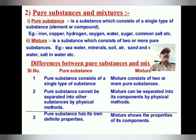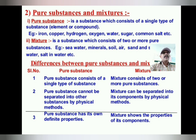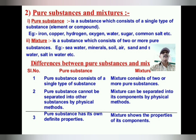A mixture can be separated into its components by physical methods easily. Third: a pure substance has its own definite properties, whereas a mixture shows the properties of its components. These are the three differences between pure substances and mixtures.